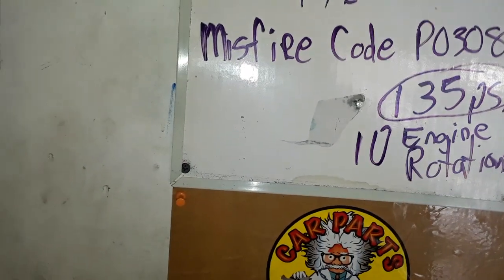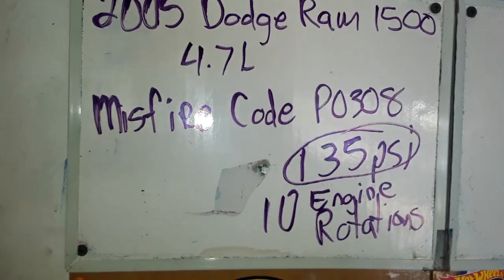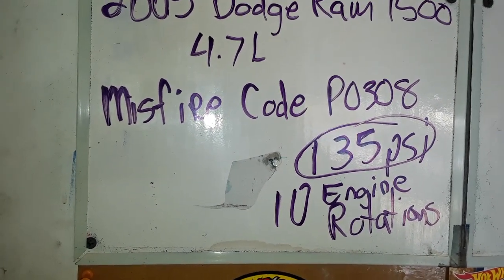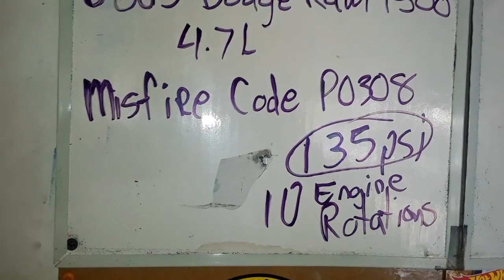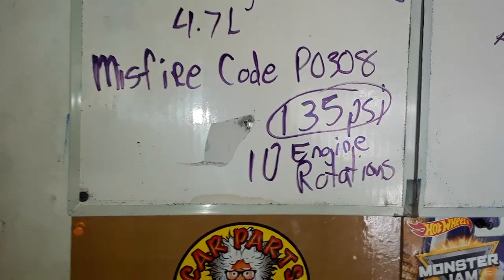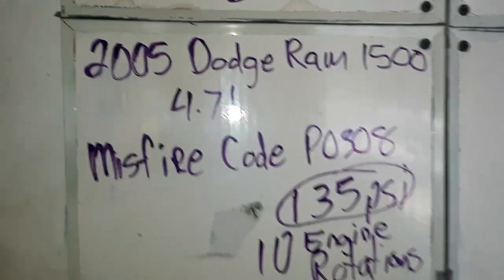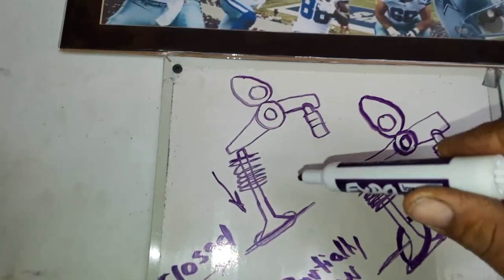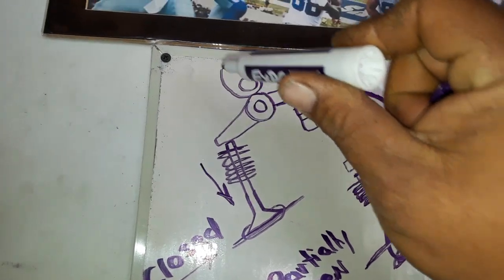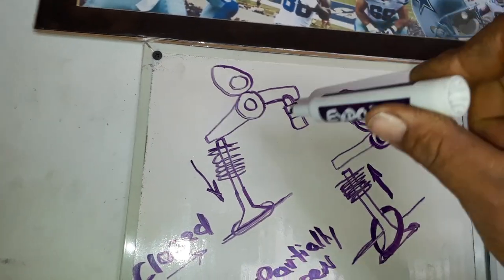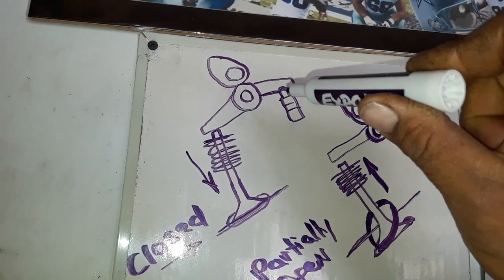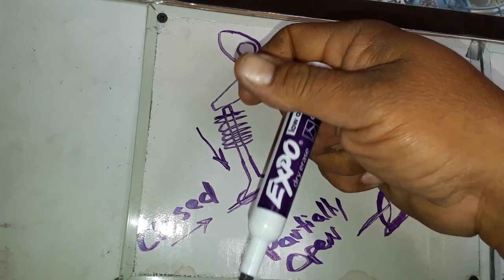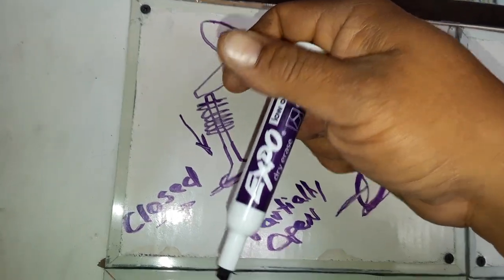I found that yes, one of the roller rocker arms did fall out. I thought it would be a simple fix - changing the lifter and roller rocker arm. This is the normal side. The valve is closed, the position of the cam lobe is up, there's pressure from the lifter pushing on the roller rocker. It's pretty snug with a lot of tension.